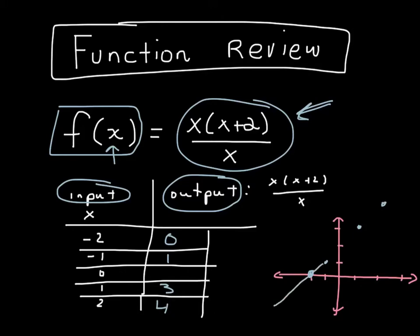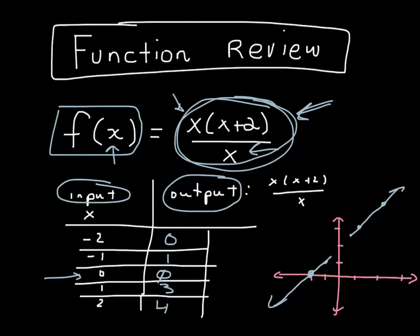But the question is, what happens when x equals 0? Because if we put 0 in, we'd be dividing by 0, and you get something that's undefined. For all intents and purposes, it's really following this straight line right up until x equals 0. So you get what's called a hole — it looks and behaves like a line except for that one spot, which is a hole at the point (0, 2).